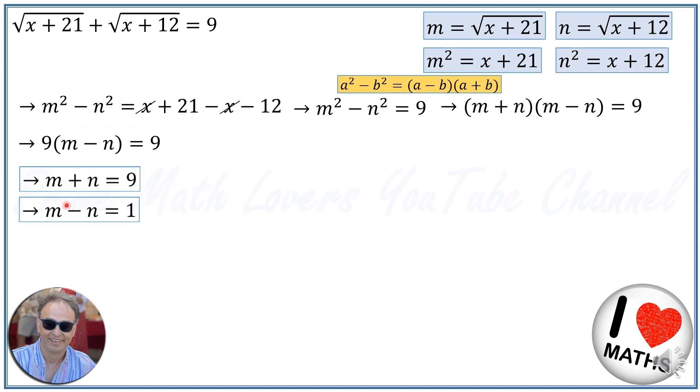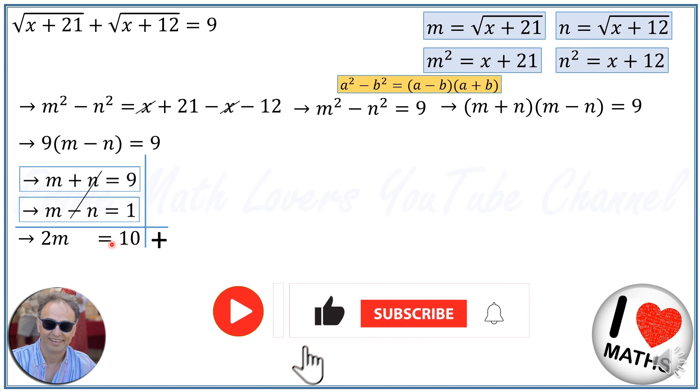I use these two equations to continue solving. I sum the two equations together. When I sum these two, I can cancel m plus n and minus n. On the first side I'll have 2m, on the second side I'll have 9 plus 1, which is 10.